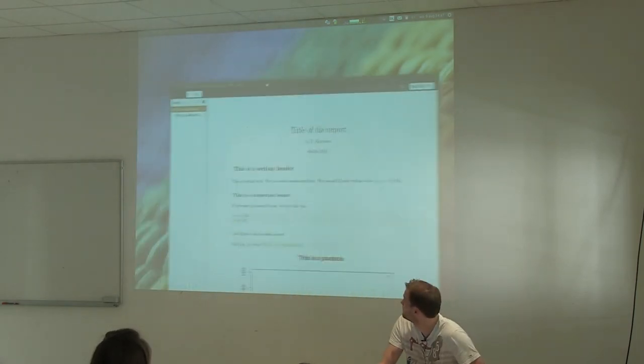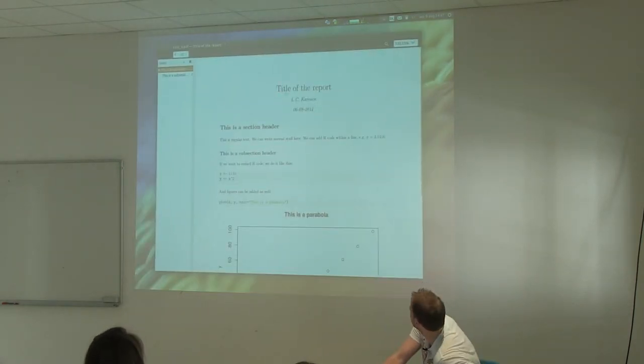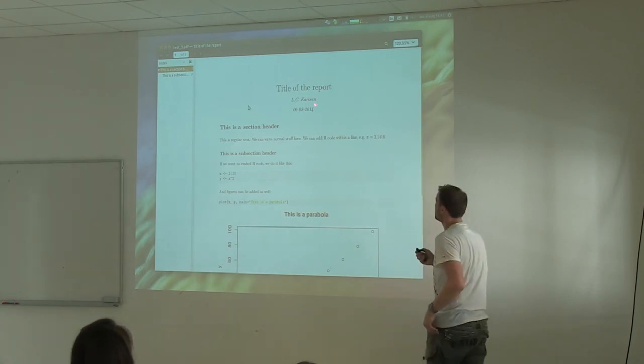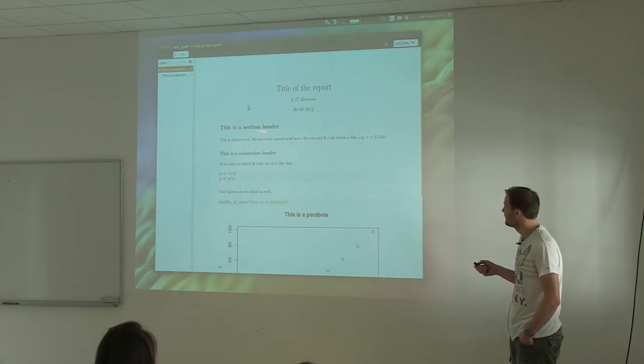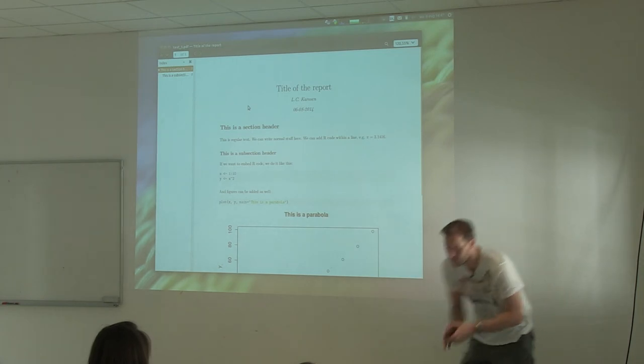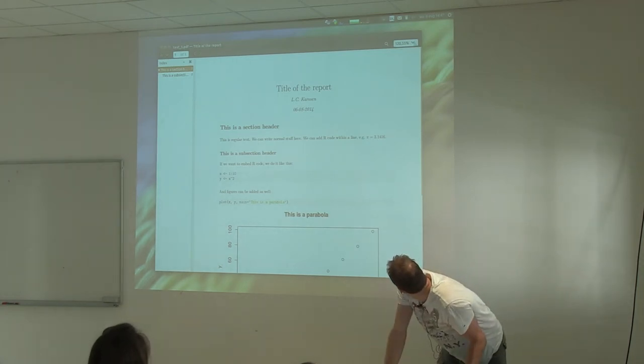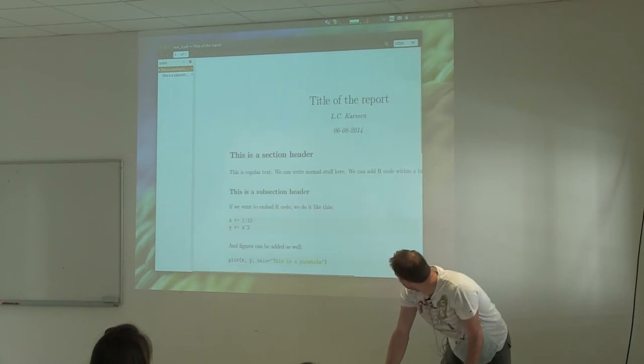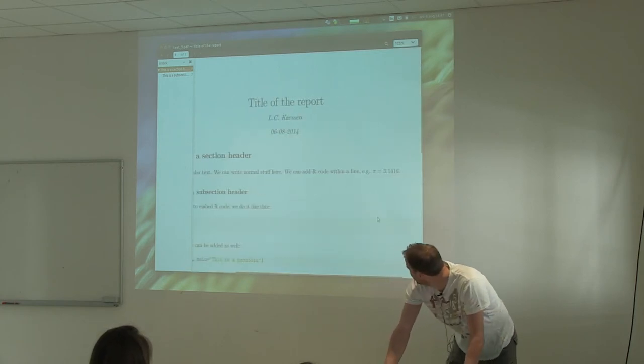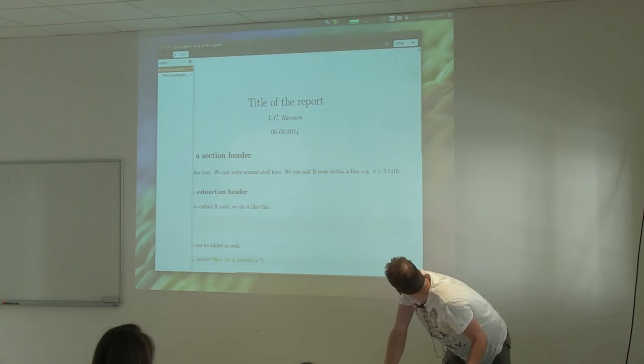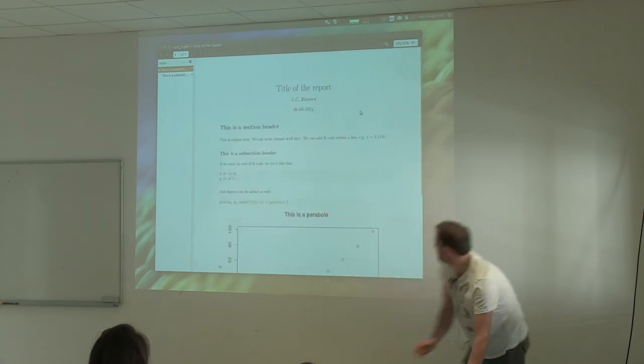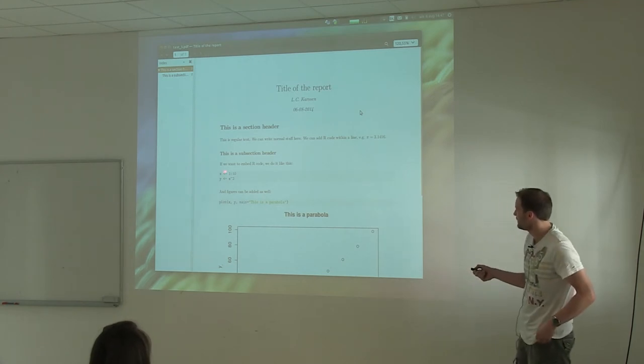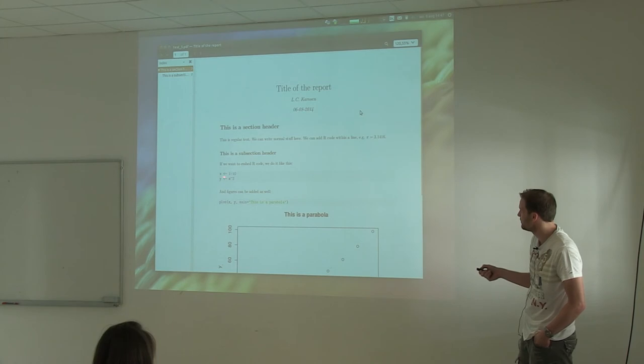What you end up with is then a PDF file that looks like this. Here is the title of the report, author, date, the section header, some text. If I zoom in a little bit you will be able to see that we have pi over there. Down here we have this piece of R code nicely in a gray box to really show that it's R, and here this figure, and this is how I created it.